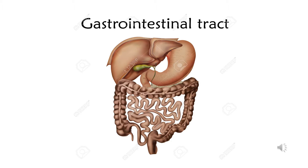We also see the major digestive glands which are associated with the gastrointestinal tract, namely the liver, the gallbladder, and the pancreas. In the series of classes on the gross anatomy of the abdomen you will be studying in detail about all of these organs.